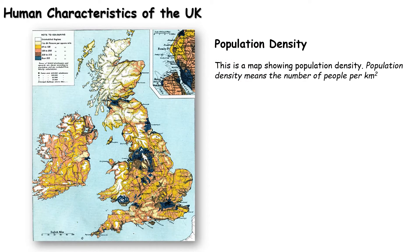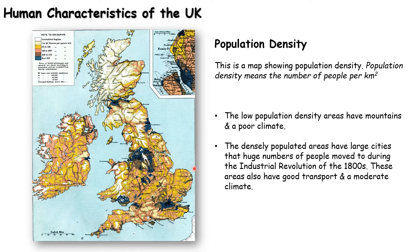Let's have a look at some human characteristics of the UK. This is a population density map — the number of people per square kilometre. The blue areas are where people are living in the largest concentrations: London, Cardiff, Birmingham, Liverpool, Manchester, Leeds, and so on. We get high population density in low-lying areas and where large cities grew during the Industrial Revolution. There are also areas of good transport and a moderate climate.